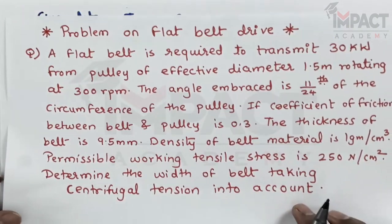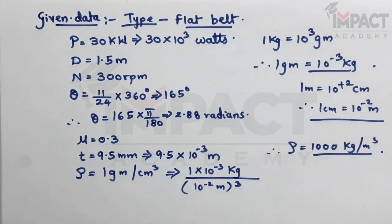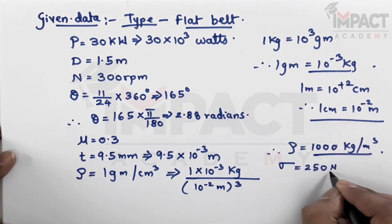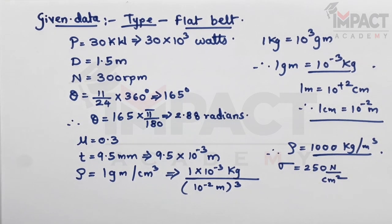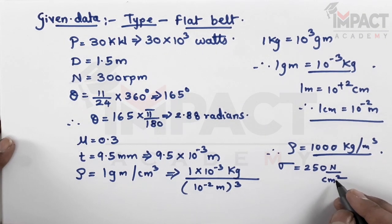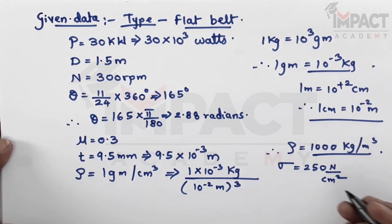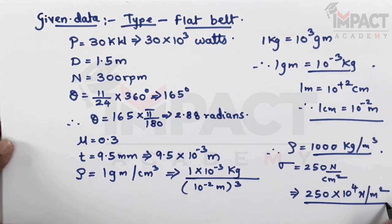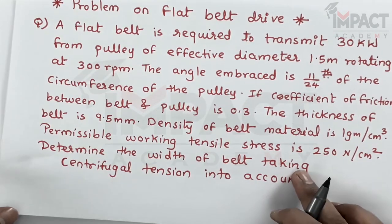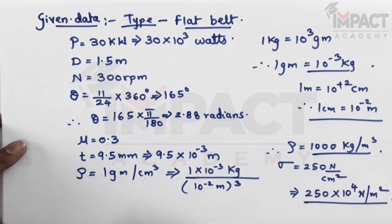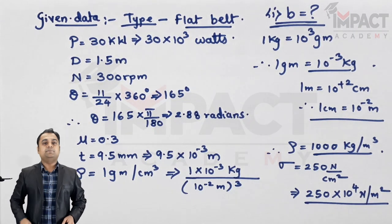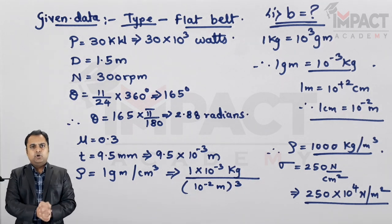The permissible tensile stress sigma is 250 N/cm². Converting to N/m²: since 1 cm = 10⁻² m, 1 cm² = 10⁻⁴ m², so the stress becomes 250 × 10⁴ N/m². The objective is to find the width of the belt B, taking centrifugal tension into account.